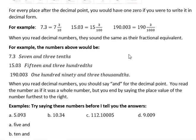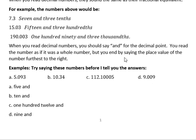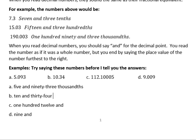Try to read these numbers before I tell you the answer. The first one: 'five and...' — that's the easy part. Then how would you read the rest of it? You would read that as 'ninety-three,' and what place would you end it in? It goes out three places, so that's 'thousandths' — five and ninety-three thousandths.